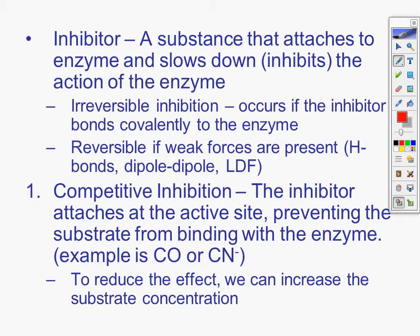Competitive inhibition. The inhibitor attaches at the active site, preventing the substrate combining with the enzyme. Example is carbon monoxide or cyanide. Cyanide comes from cigarette smoke. Carbon monoxide comes from exhaust of a car. So what happens is if you're trying to produce oxygen in your body and you happen to be in a garage that's closed and the car is running, the carbon monoxide is going to prevent you from being able to process the oxygen. That's a competitive inhibition. To reduce the effects, we can increase the substrate concentration.